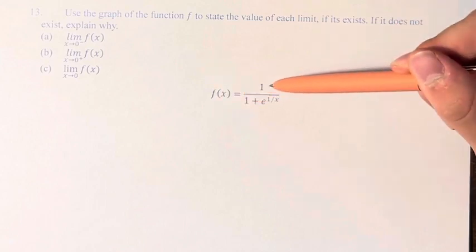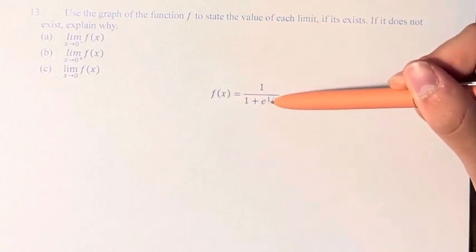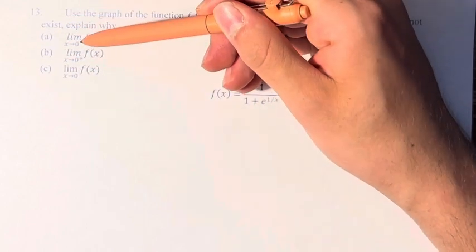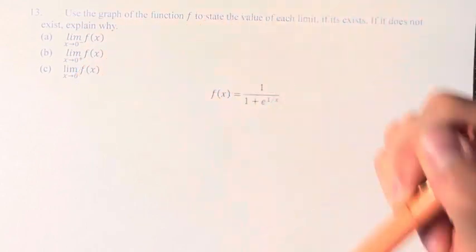So we have the function f of x is equal to 1 over 1 plus e to the 1 over x. And so we're looking at the limit as x approaches 0 from the left, from the right, and overall together.